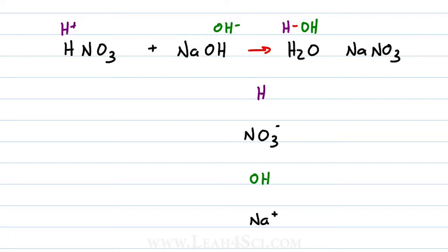Let's start balancing. How many acidic protons do we have? We have one in the reactants for nitric acid and one in the product as part of the HOH. We have one nitrate in the reactants and one nitrate in the products. We have one hydroxide in the reactants and one hydroxide in the HOH of the products, and sodium — one and one. There's one of everything!